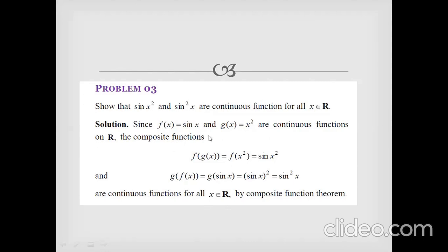The first function is continuous, meaning the graph has no break. The graph is continuous without any break for all real numbers. Similarly, x² is continuous — its graph is also continuous for all real numbers.